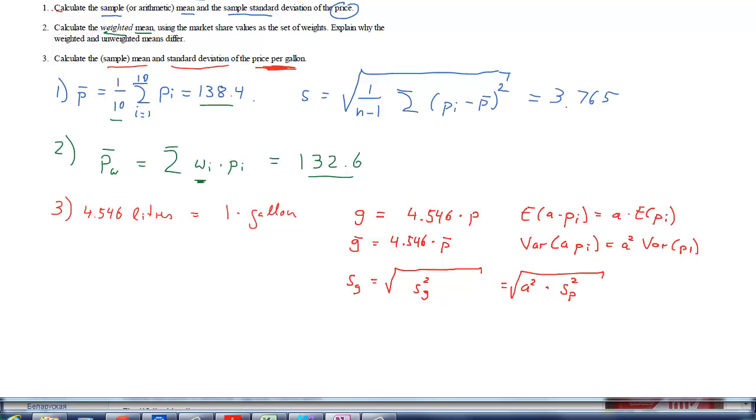And we calculated that. What we calculated up here is the sample variance of P. And that means the sample standard deviation of G is just going to be 4.546 times the standard deviation which we calculated for P beforehand. That is 3.765. And again I'll leave it up to you to calculate the exact numerical value for this. Okay, that's question one.